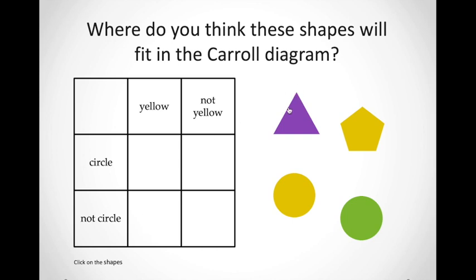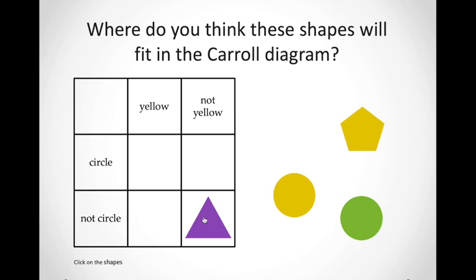Let's begin. This purple triangle — is it a circle? No, it is not a circle. Is it yellow? No, it is not yellow. So we're going to put it in the block that says not a circle and not yellow. Let's try this one over here. We have a circle. Is it a circle? Yes, it is. Is it yellow? Yes, it is. So we're going to put it in the block that says circle and yellow.